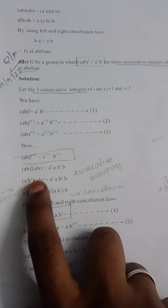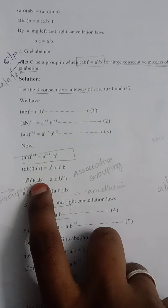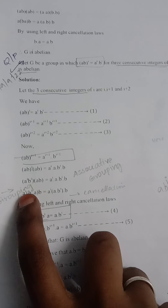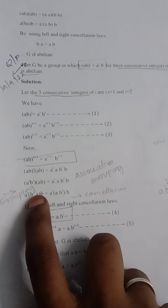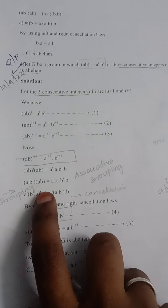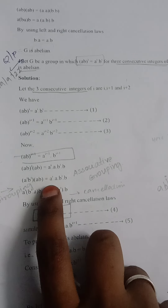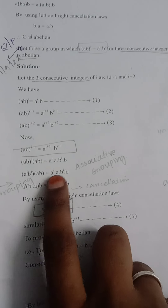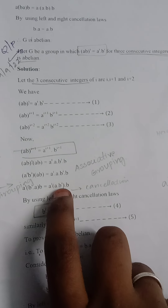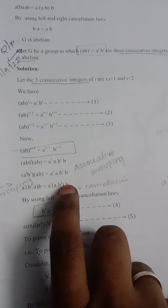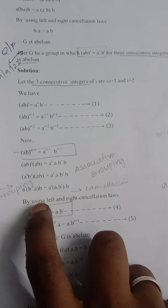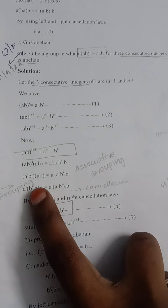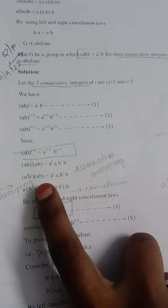We club and rearrange terms: b^i * a are grouped together, and a * b^i are grouped together on the other side. Using left and right cancellations, the a^i and b terms cancel on both sides.